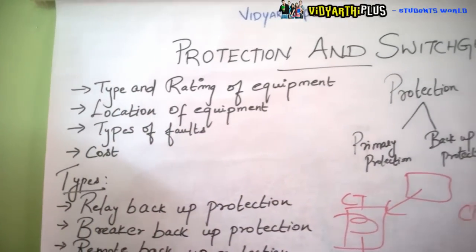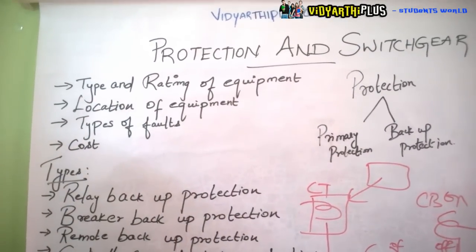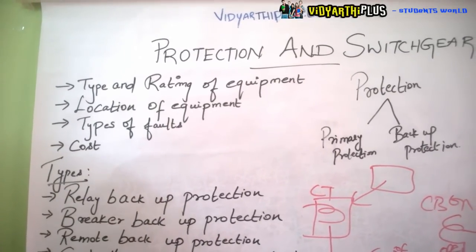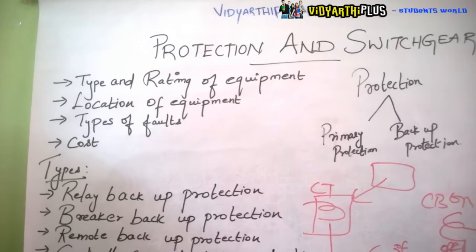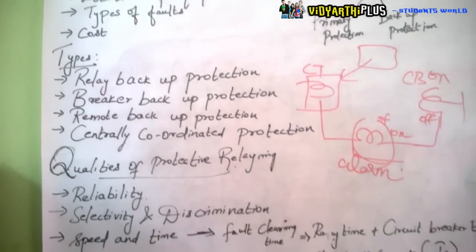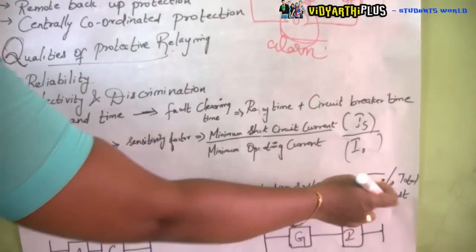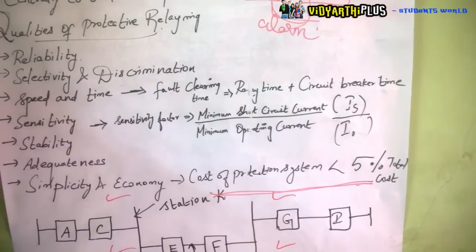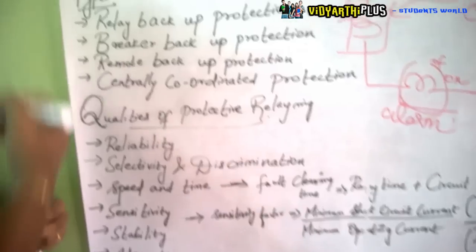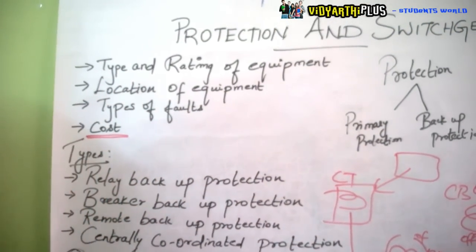The relay which we are connecting for protection should always be economical. The cost of the protection equipment should be less than the 5% of the total cost of the equipment. It should not go beyond the cost of the protected equipment. So cost is a very important factor when concerned with protection.